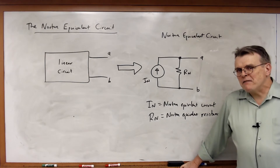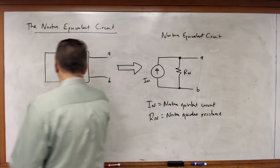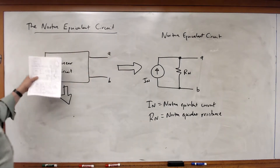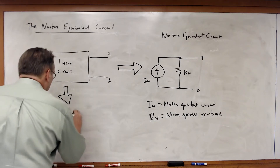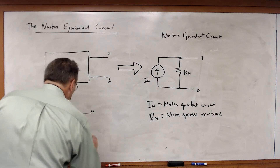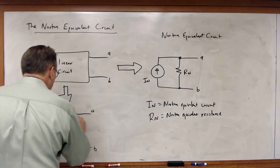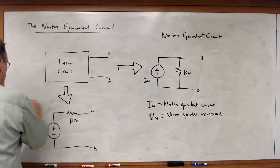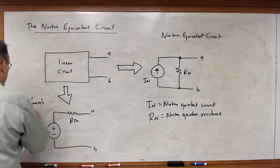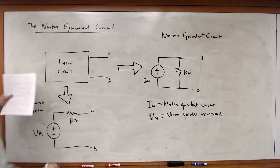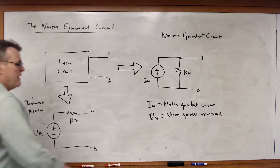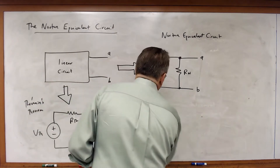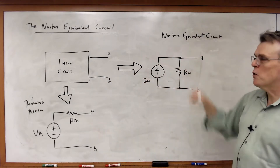Except that Thevenin proved this, as we've already seen, that for any linear circuit there exists this transformation — where Thevenin's theorem shows that I can transform that same circuit into a voltage source in series with a resistance. Obviously these have to be equivalent circuits. And in fact, what is the obvious equivalence between the Thevenin equivalent and the Norton equivalent circuit?